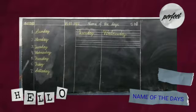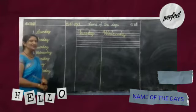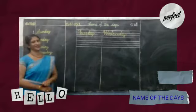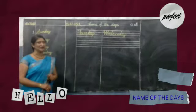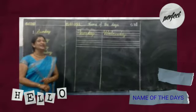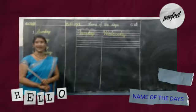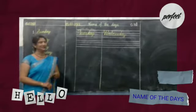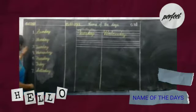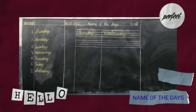How many days are there in a week? How many days are there in a week? The answer is: there are 7 days in a week.